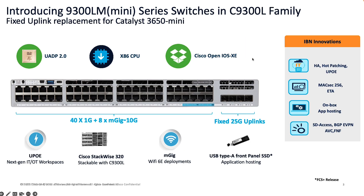The Catalyst 9300 LM series is our shallow depth platform based on the same UADP 2.0 ASIC as well as the same IOS-XE operating system that we have on our existing 9300L family. This essentially enables all the IBNA innovations we had on our 9300L family as well. Features and functionality like hot patching, MACsec 256, on-box app hosting, SG access, and BGP EVPN architecture are integrated in the 9300 LM family.